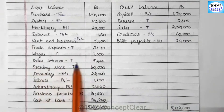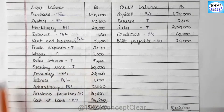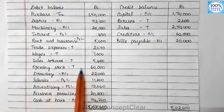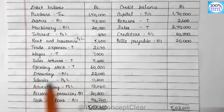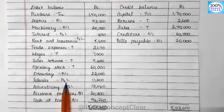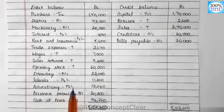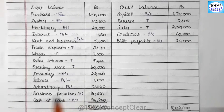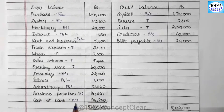Sales returns are in the Trading account. Opening stock is one of the Trading account items. Drawings is one of the Balance Sheet. Salaries is one of the Profit and Loss account. Advertisement is one of the Profit and Loss account. Business premises is one of the Balance Sheet. Cash at bank is one of the Balance Sheet.